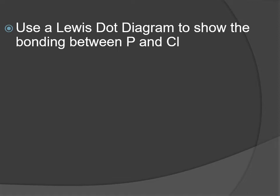To practice, we're going to use a Lewis dot diagram to show bonding between phosphorus and chlorine. We start with the symbol in the middle and put the valence electrons around it. Phosphorus is in column 15, so it has five valence electrons. Chlorine is in column 17, so it has seven valence electrons. These are both non-metals - they do not want to give up their electrons.